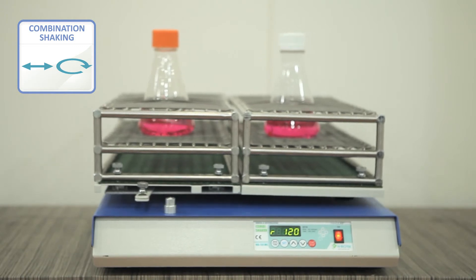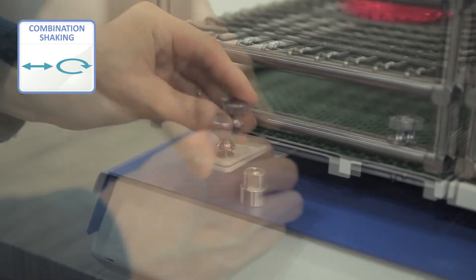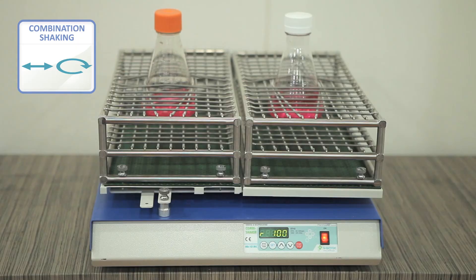NBiotech Shaker and NB101MC combination shaker enables simultaneous use of orbital and reciprocating motion with simple operation.